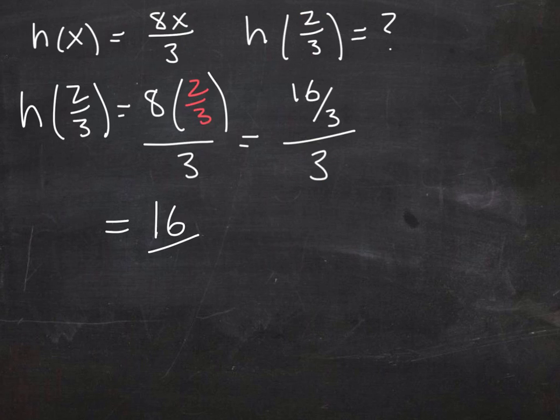Dividing by the three here is the same as multiplying by its reciprocal, and so in this case would be the same as multiplying by one-third. And so we get a total of sixteen-ninths - that would be this answer.